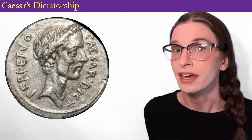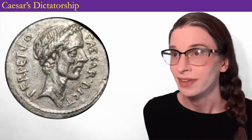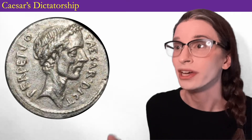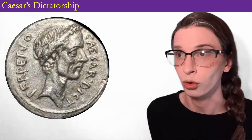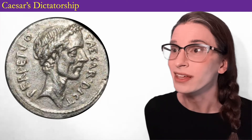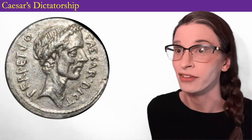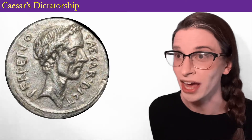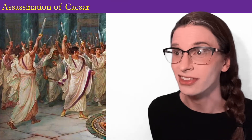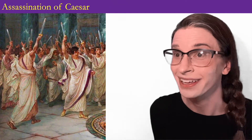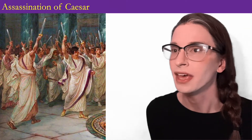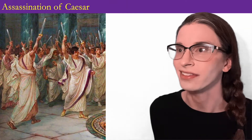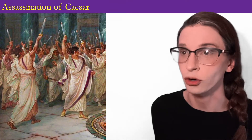By early 44 BCE, Caesar's power was absolute. There's just one thing: Caesar famously showed Clementia — mercy — to his Roman opponents, which no warlord before him had. This means that a lot of his old adversaries are still alive in Rome, plotting how best to challenge him. Caesar's obvious disregard for the norms and processes of the Republic leads a lot of his former supporters, especially the aristocrats, to ally with those who oppose him. They believe that the Senate must kill Caesar, just as the Senate killed Romulus, Rome's first tyrant.